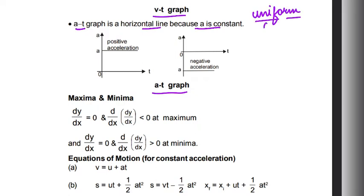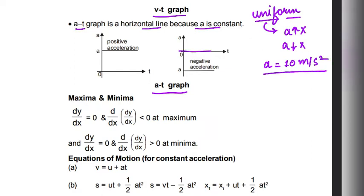So uniform means the acceleration stays constant — for example, at 10 meters per second squared. It will always be constant with time. When acceleration A is positive, it means the Y-axis value is positive. When acceleration is negative, it means retardation.